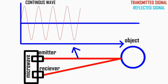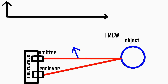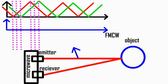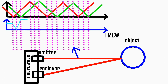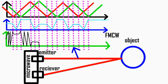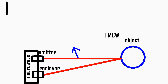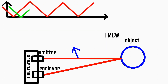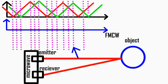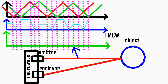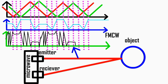We also have frequency-modulated continuous wave radar sensors. FMCW sensors emit a continuously changing frequency signal and measure the frequency difference between the emitted and reflected signals. This allows for more precise distance and speed measurements and is often used in industrial automation and distance measurement applications.